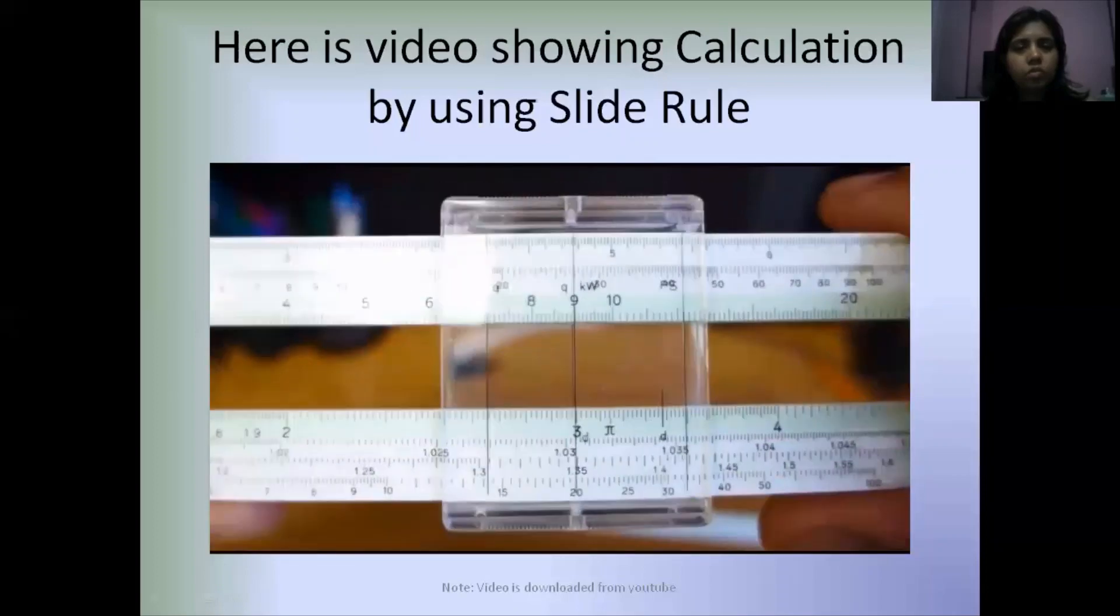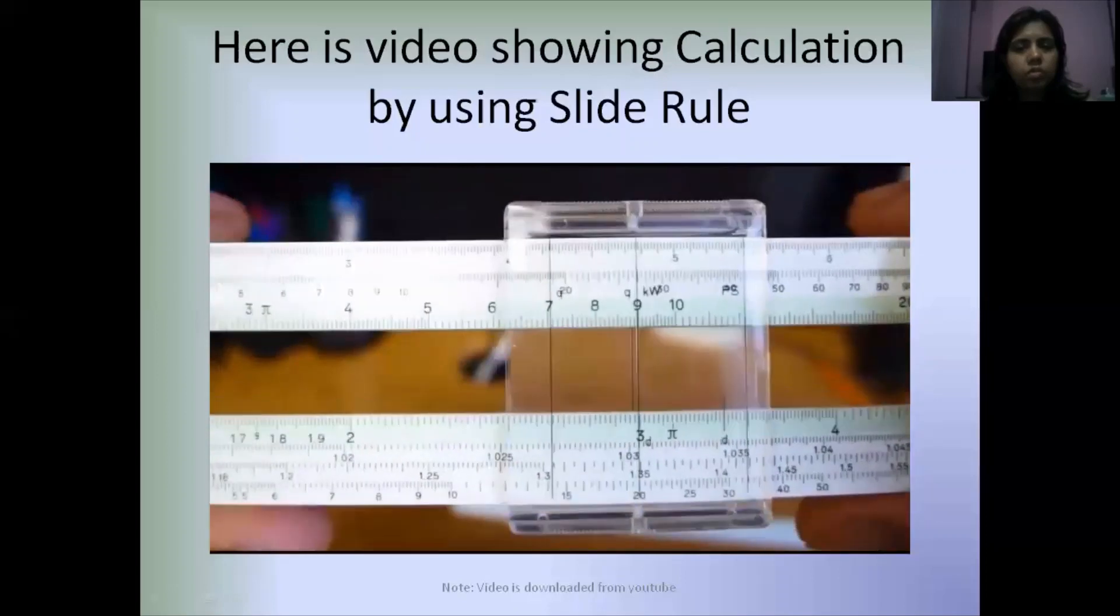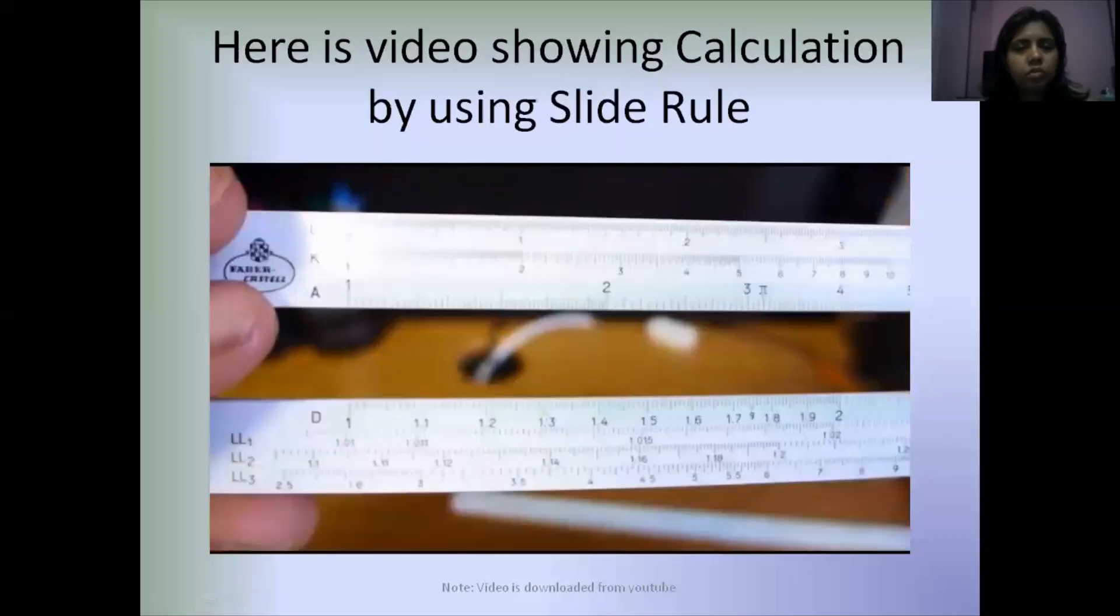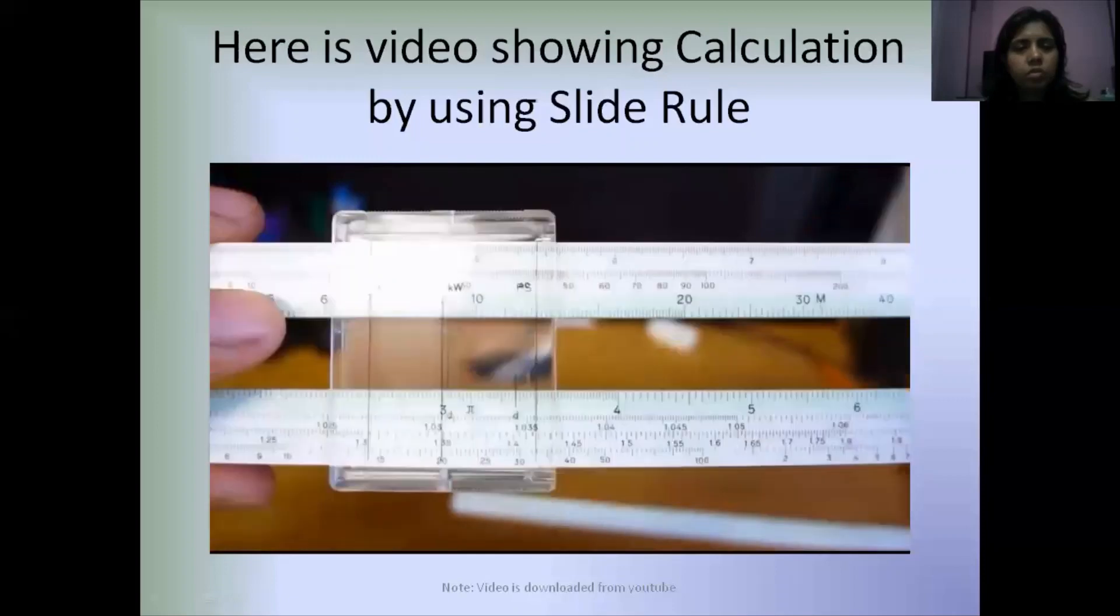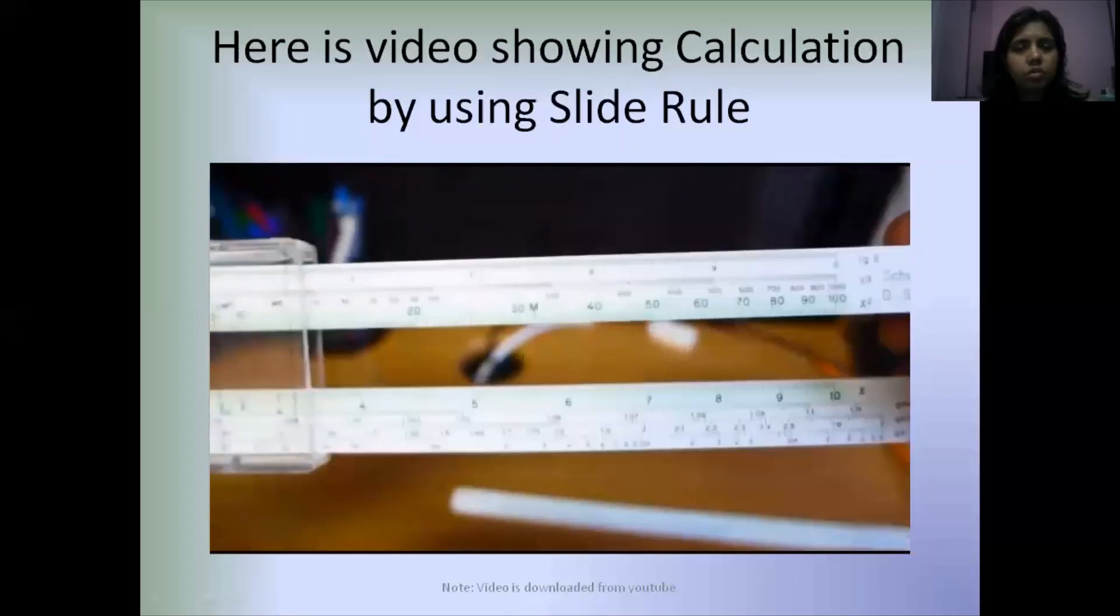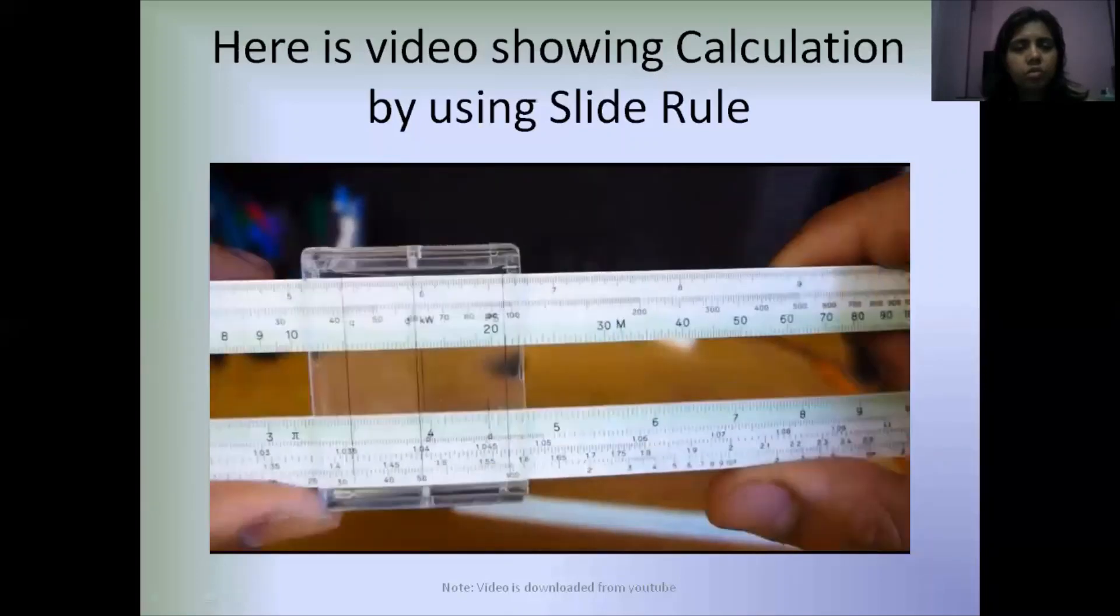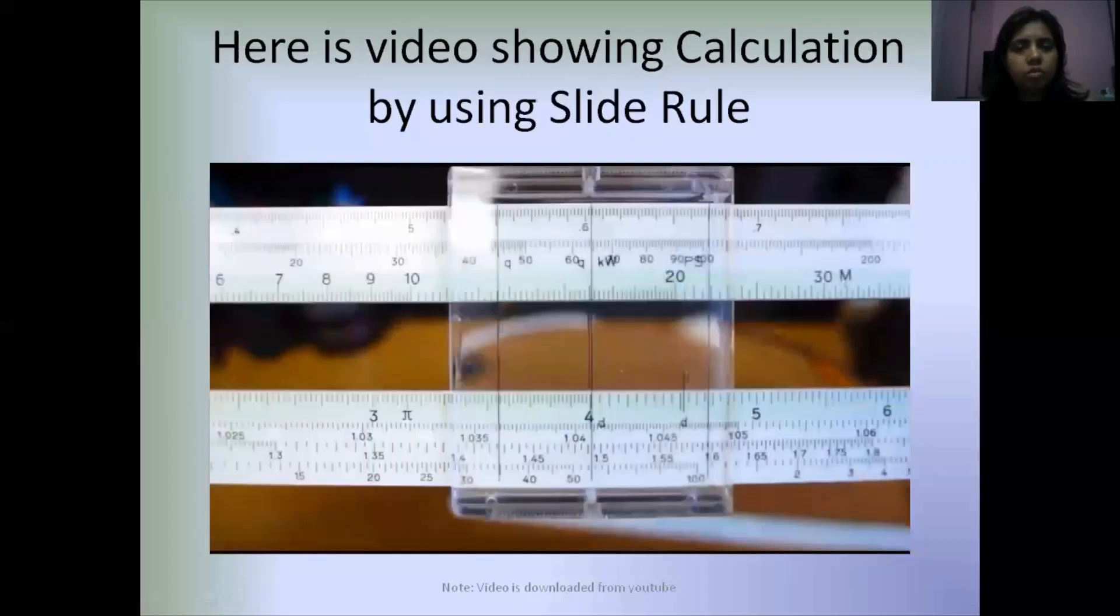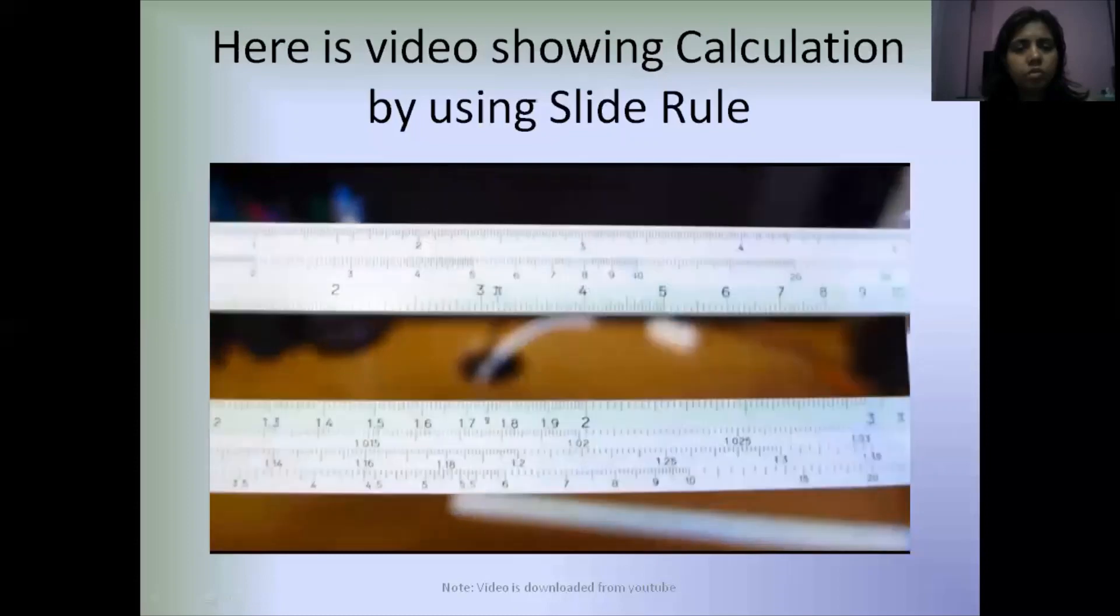If you want to take the square root of a number with an odd number of digits, then you use the left side of the A scale. But if you want the square root of a number that has an even number of digits, you use the right side of the A scale. For example, if I want to take the square root of 16, I put the cursor at 16 and read the answer four off the D scale.